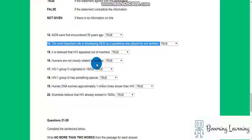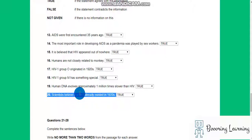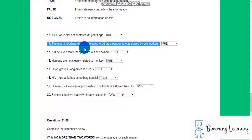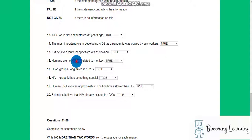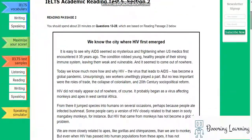Humans are not closely related to monkeys. HIV first group originated in 1920s. HIV first group M has something special. Human DNA evolves approximately 1 million times slower than HIV. Scientists believe that HIV already existed in 1920s. This seems false or not given. It looks very long.